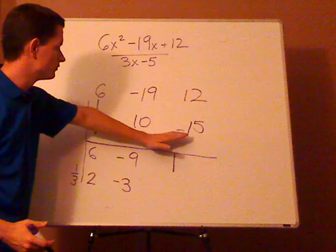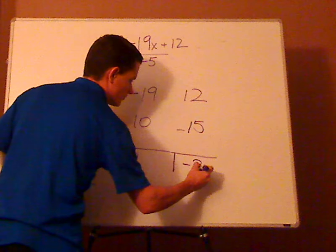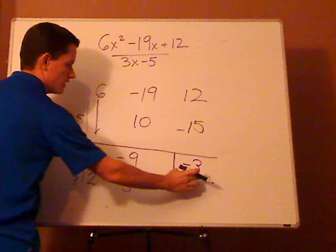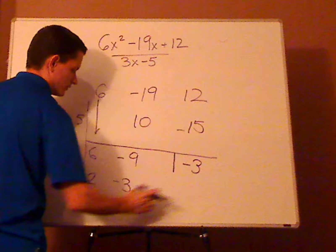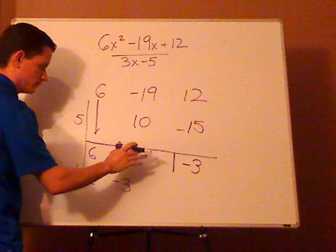Then add. So 12 plus negative 15 is negative 3. Whatever you do, do not multiply this by that 1 third. Just leave it.